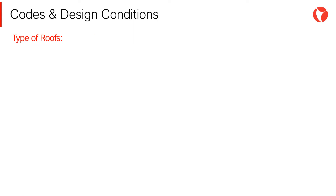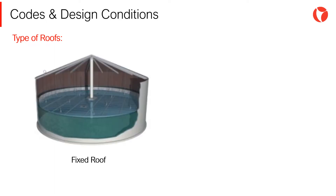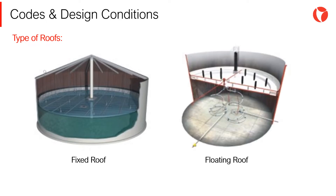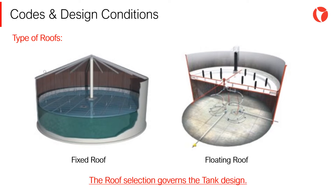From the different types of roofs, the most used ones are the fixed roof, mainly used to store non-volatile products such as water, ethylene glycol, etc., and the floating roof type, mainly used for volatile fluids such as petroleum and its derivatives. It is worth mentioning that the roof selection governs the tank design.